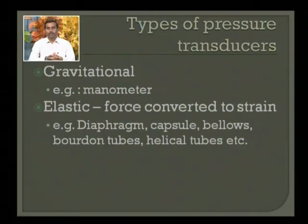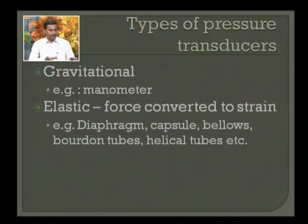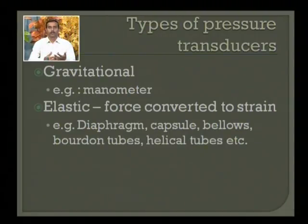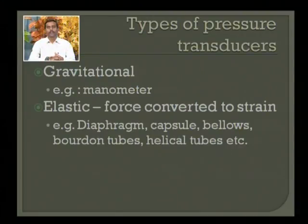Examples of gravitational measurement are manometers — either a U-tube manometer, inclined tube manometer, or cistern manometer. These manometers have a liquid filled in a tube that can be utilized for pressure measurement. In the elastic category, a force is applied to an elastic object and whatever strain is generated in that object is the measurement of pressure. Transducers of elastic type include diaphragm type, capsules, bellows, Bourdon tubes, and helical tubes.